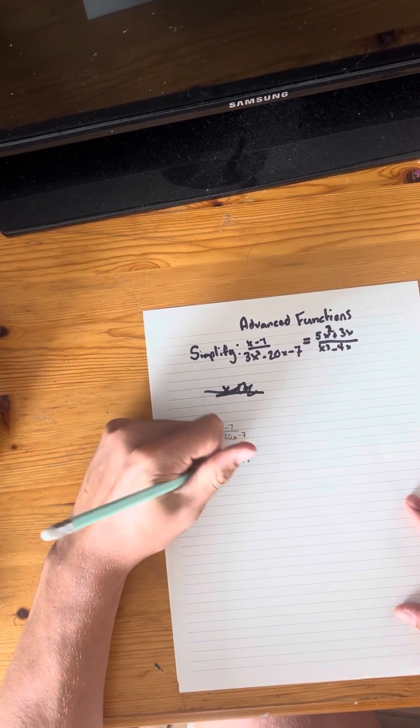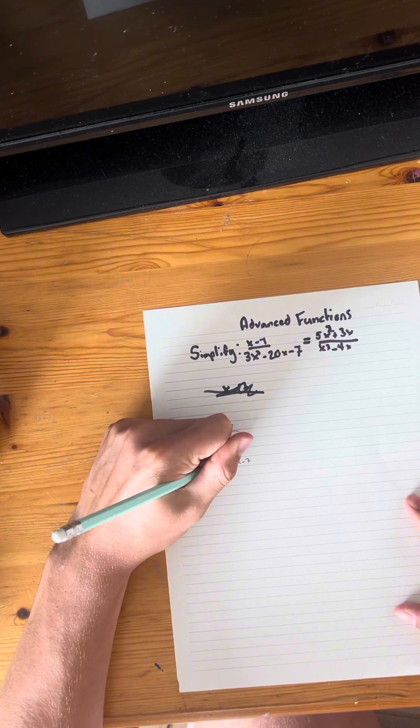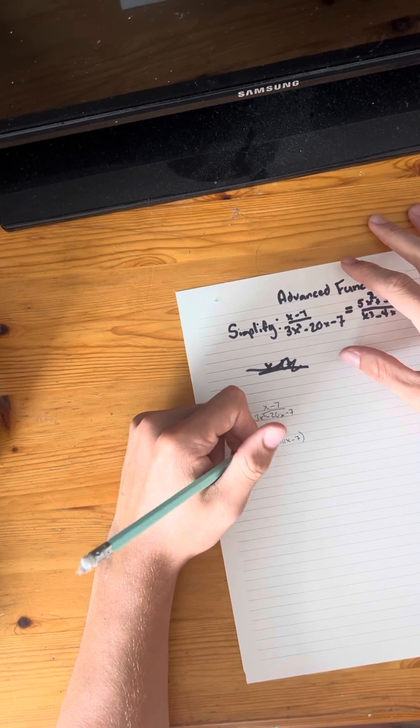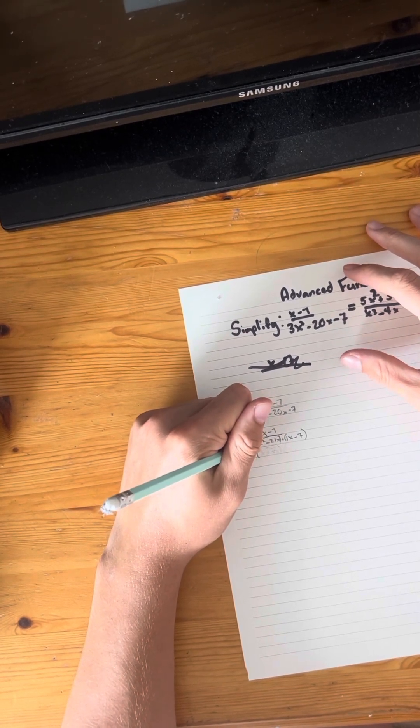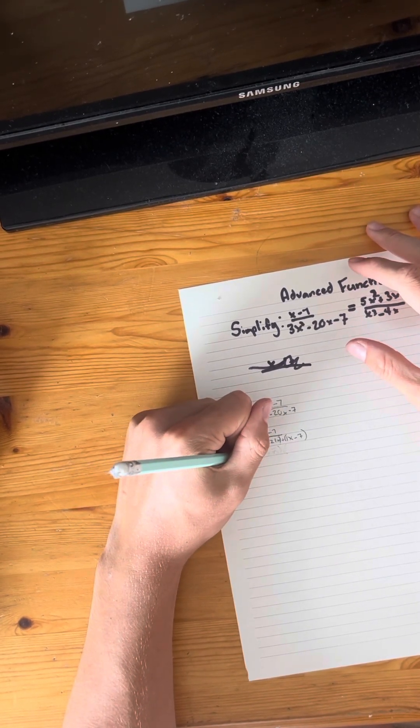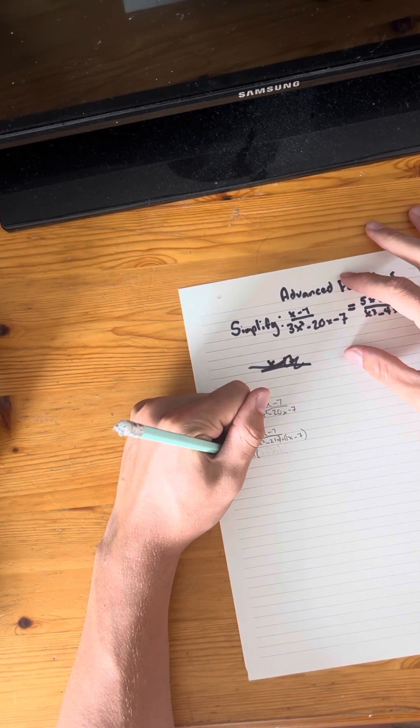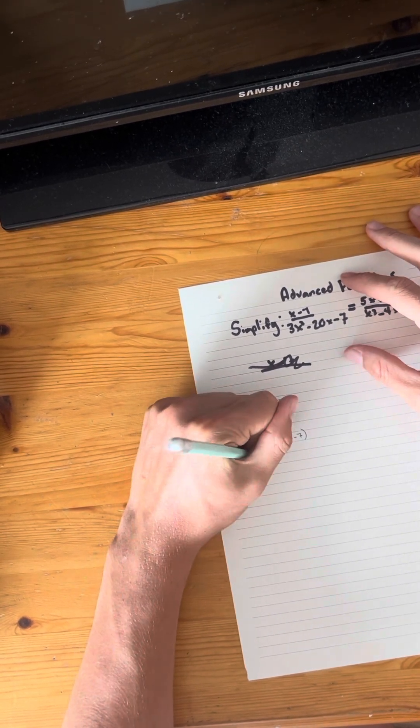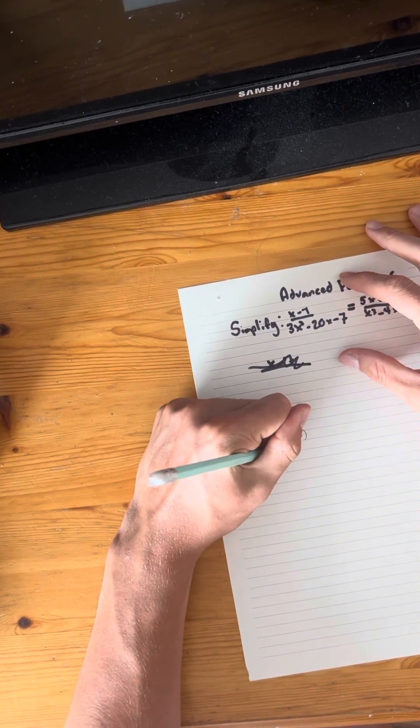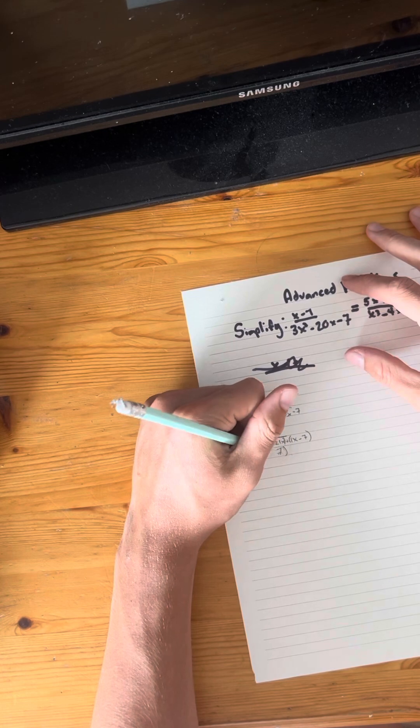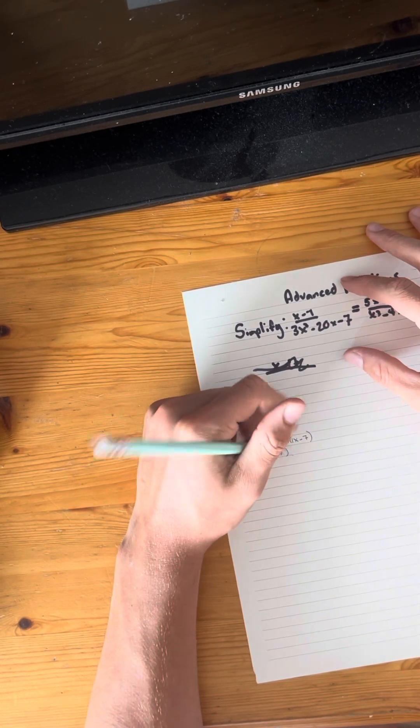Now what we can do is we can start factoring these out fully. So 3x, you can get rid of that because 3 is a factor of 21. So 21 divided by 3 is 7. Close the bracket there because 3x times 7 equals negative 21x.